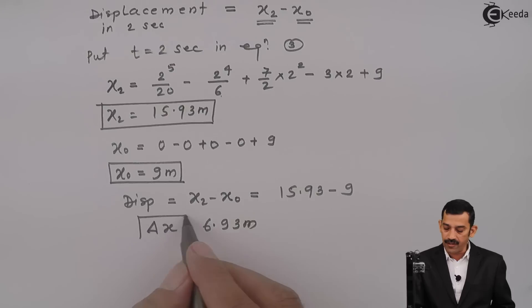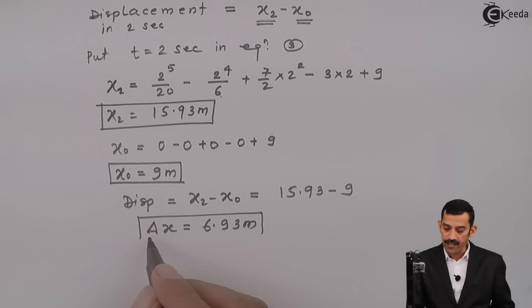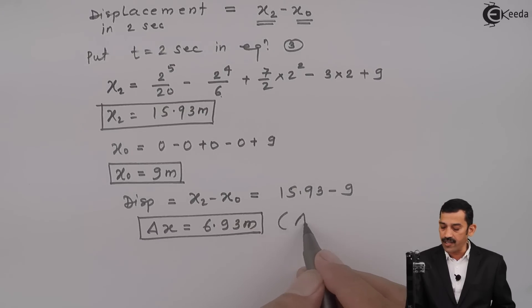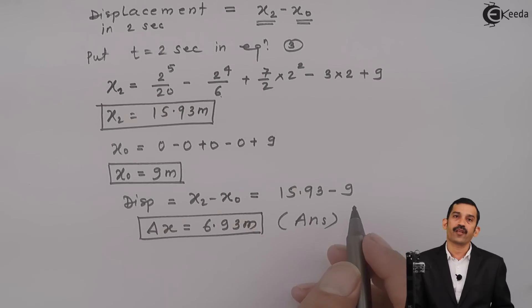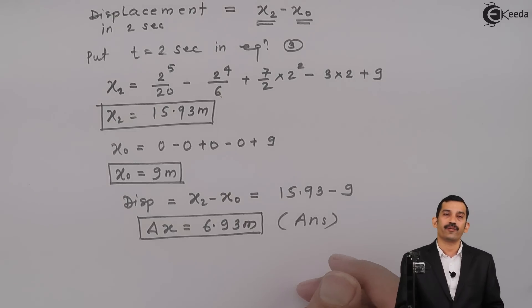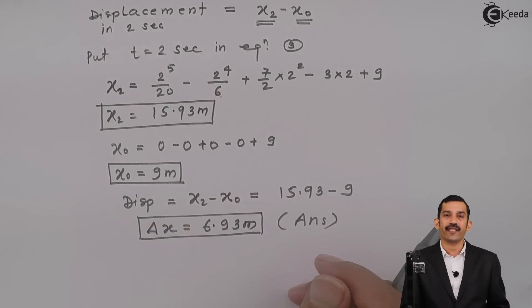This is the final answer. Three answers have been obtained: acceleration at t = 2 seconds is 7 m/s², velocity at t = 2 seconds is 9.67 m/s, and displacement in 2 seconds is 6.93 meters. Thank you.